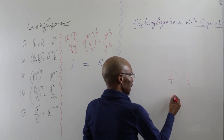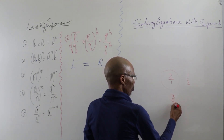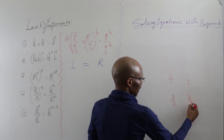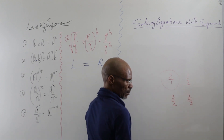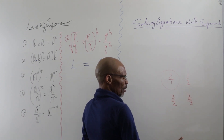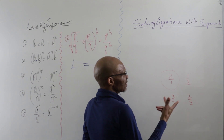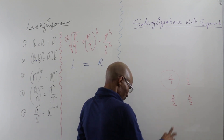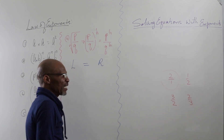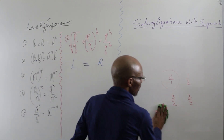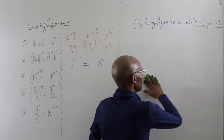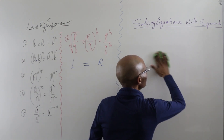If you have 3 over 2, the inverse will be 2 over 3 — you flip it. That's the inverse. You see, when we study inverse functions, they are quite interesting and enjoyable.